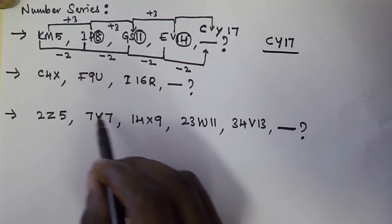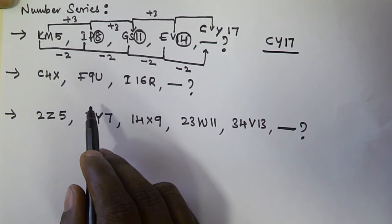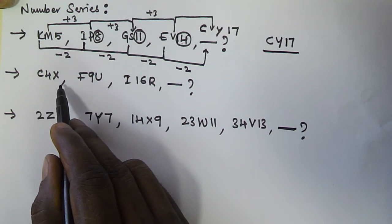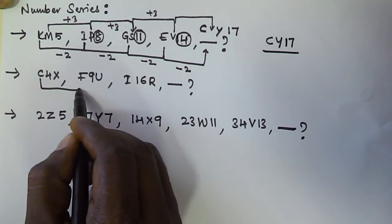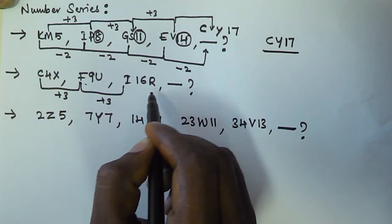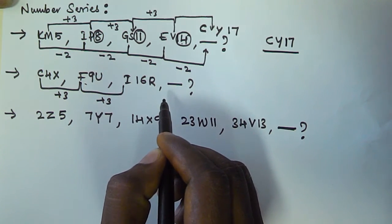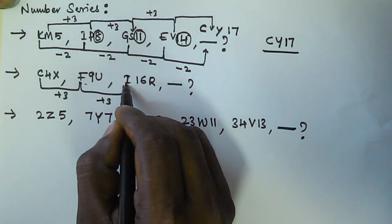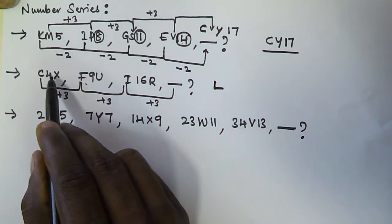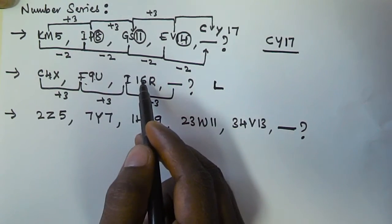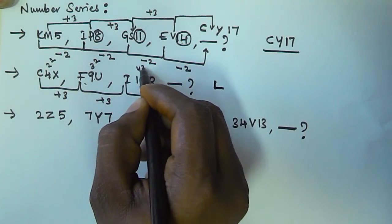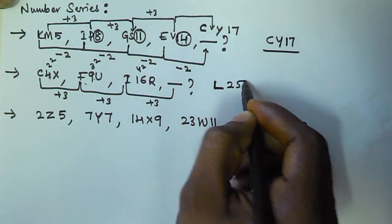For Problem 2, the first letters are C, F, I — C to F is plus three (C, D, E, F), F to I is plus three (F, G, H, I), so the next is plus three again: I, J, K, L — giving us L. For the middle numbers: 4 = 2², 9 = 3², 16 = 4², so the next is 5² = 25.